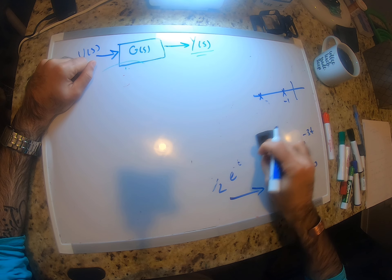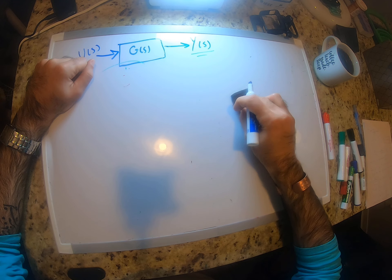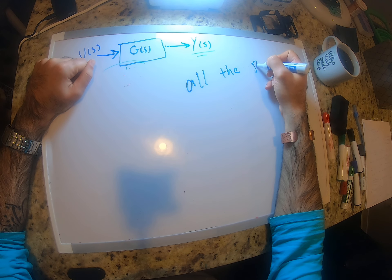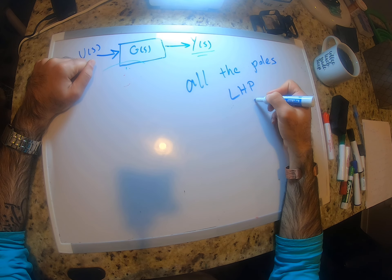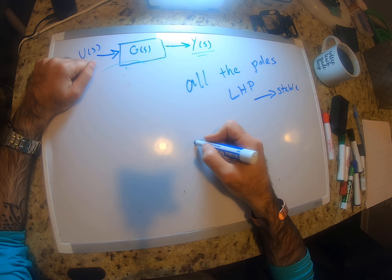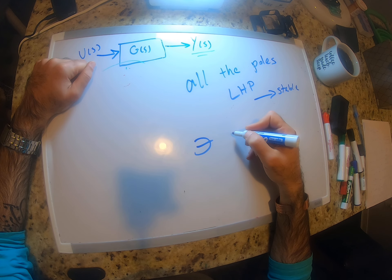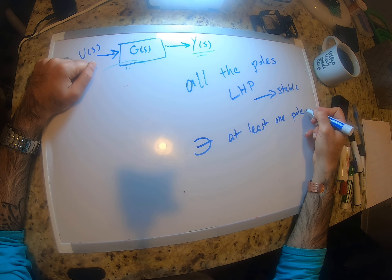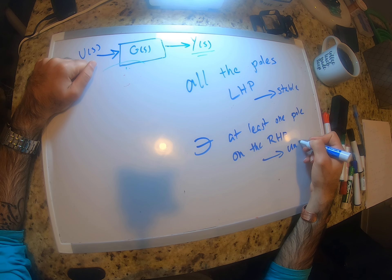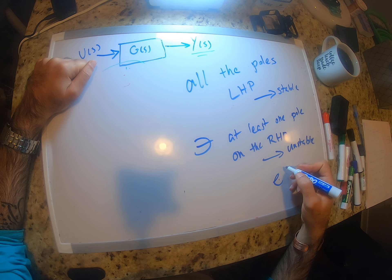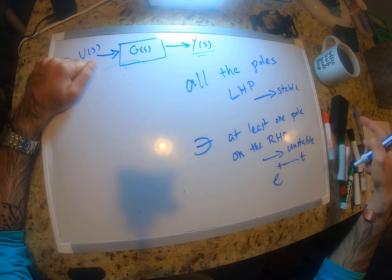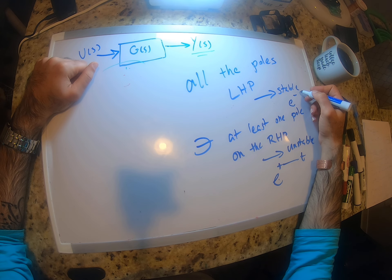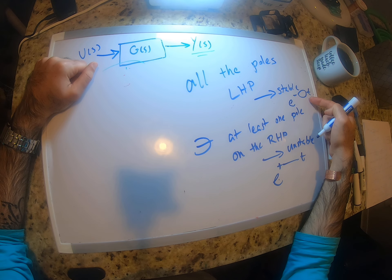A system is stable if all the poles of the system are on the left-hand side. If there exists at least one pole on the right-hand side, the system is unstable — we'll have a term with a positive exponent that grows to infinity as t increases. If all poles are on the left-hand side, all terms decay to zero as t goes to infinity.